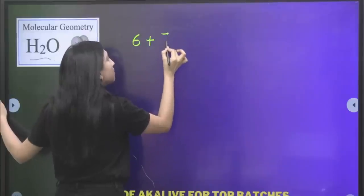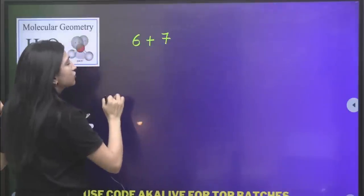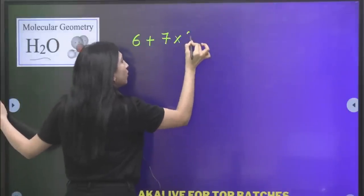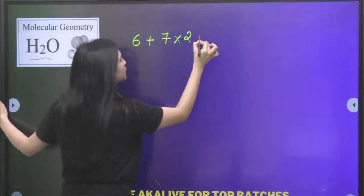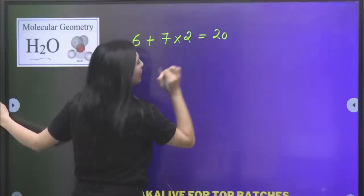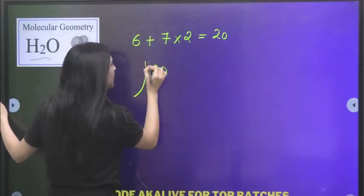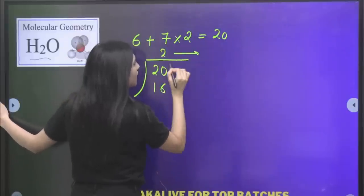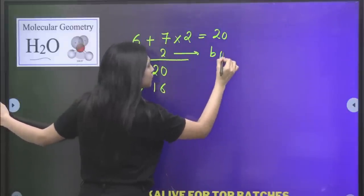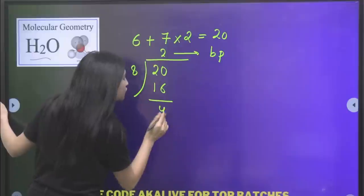And since in the water molecule you have two hydrogen atoms, so it will be 7 into 2. So here you have total valence electrons of 20. Now if we divide it by 8, your quotient is 2, so you have 2 bond pairs. And here we have remainder 4.